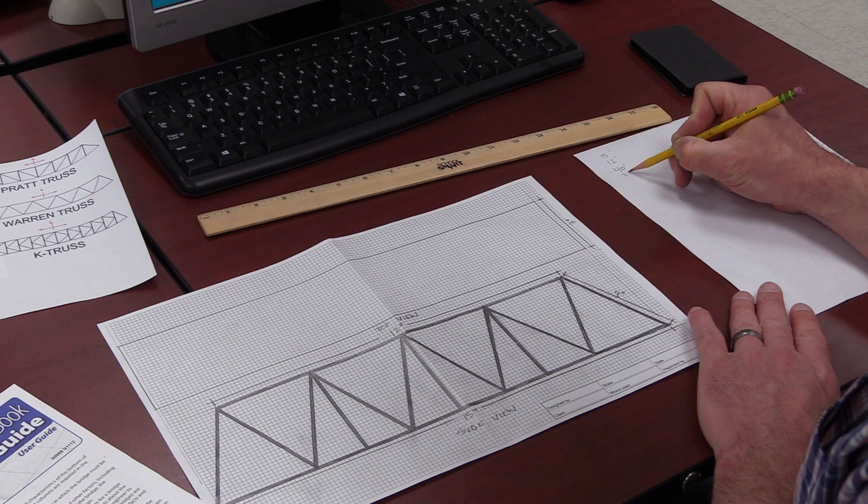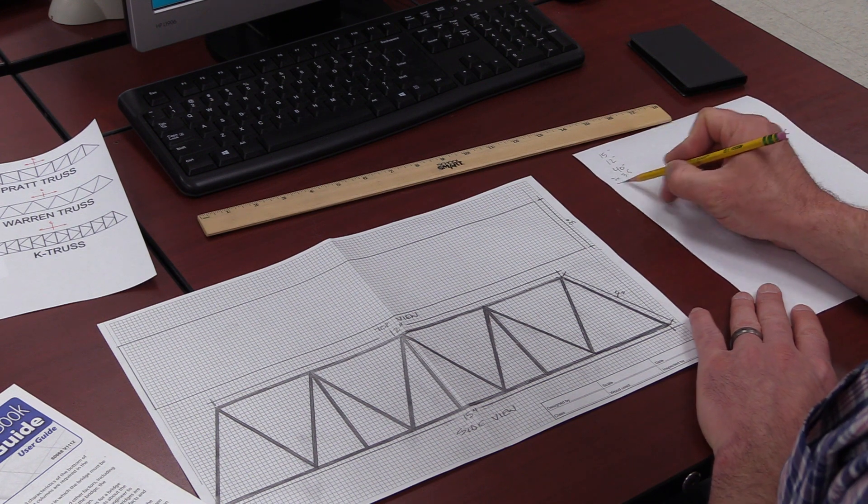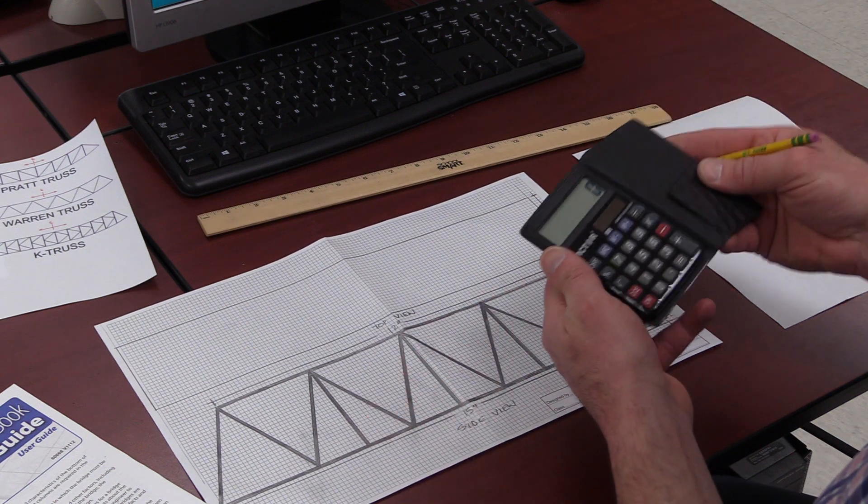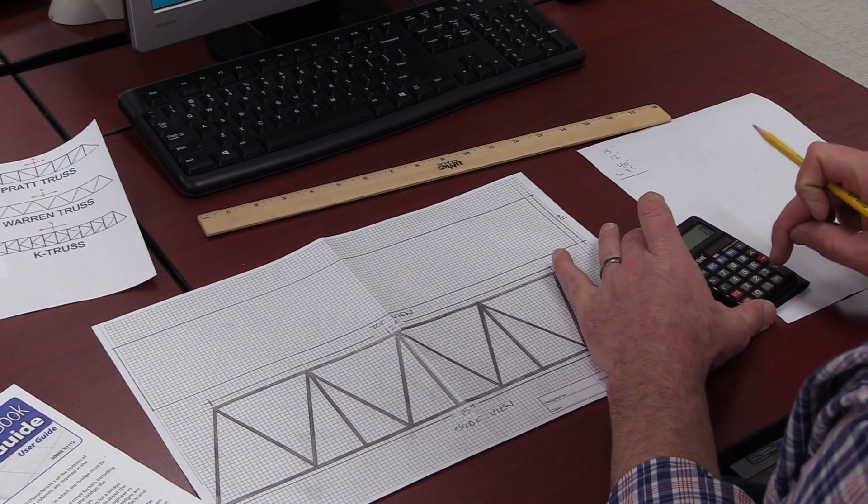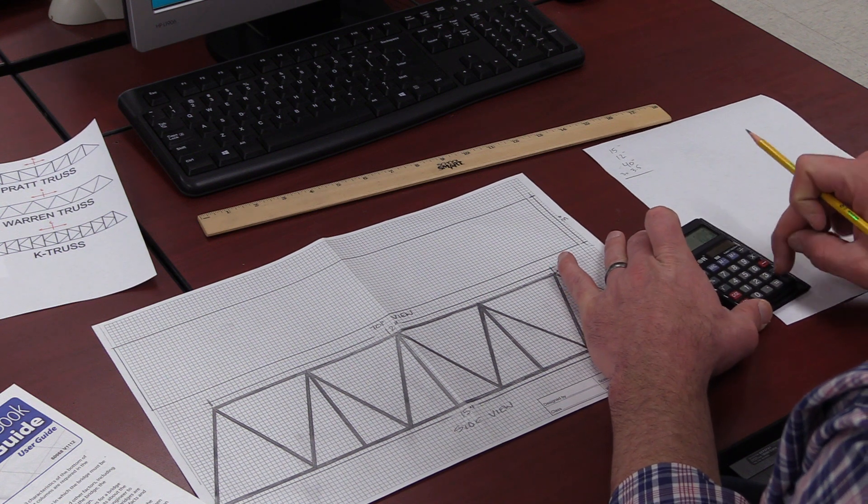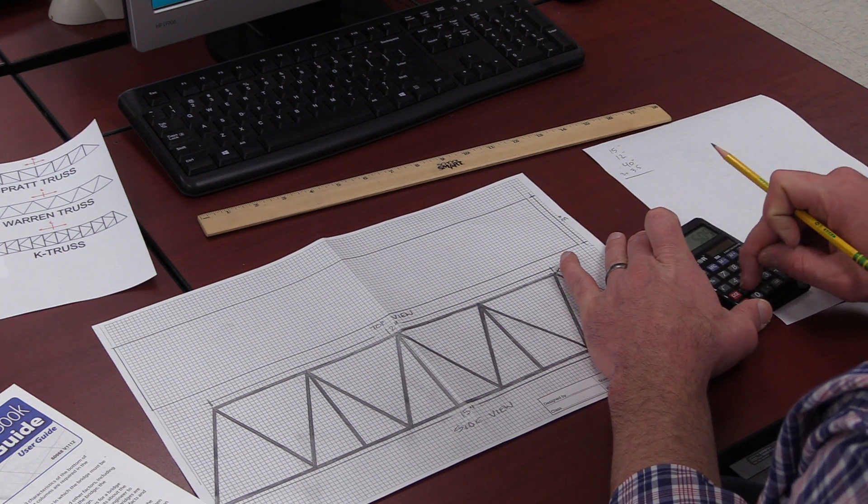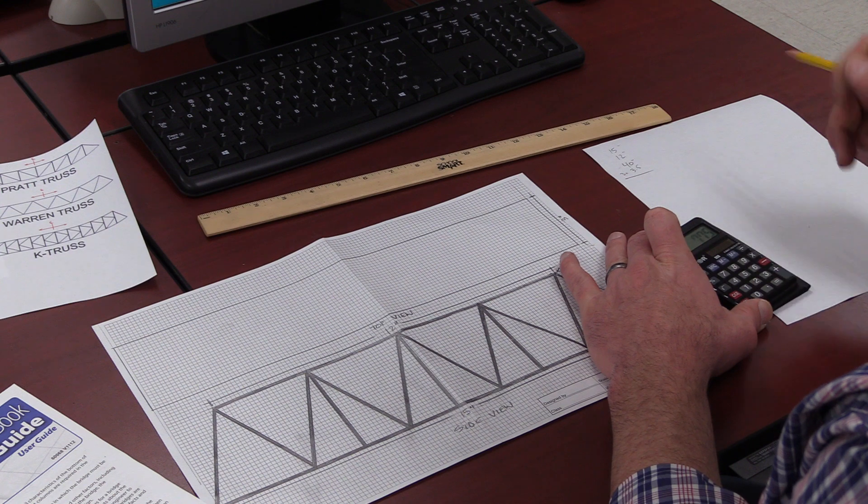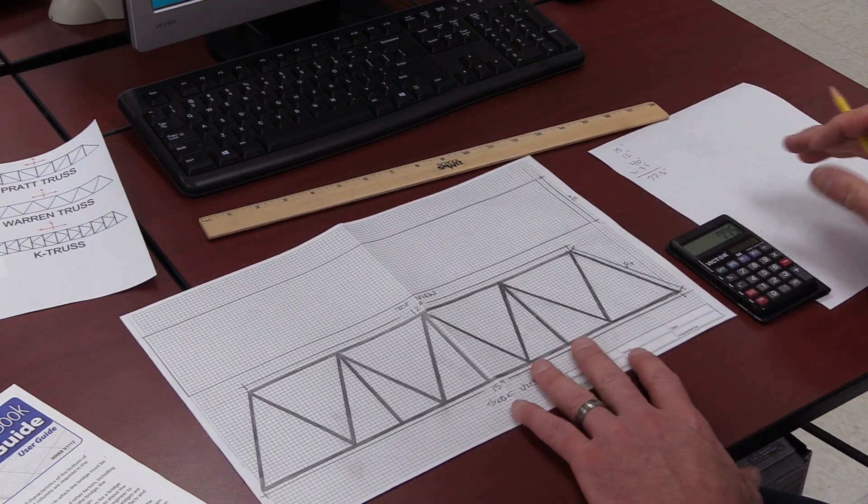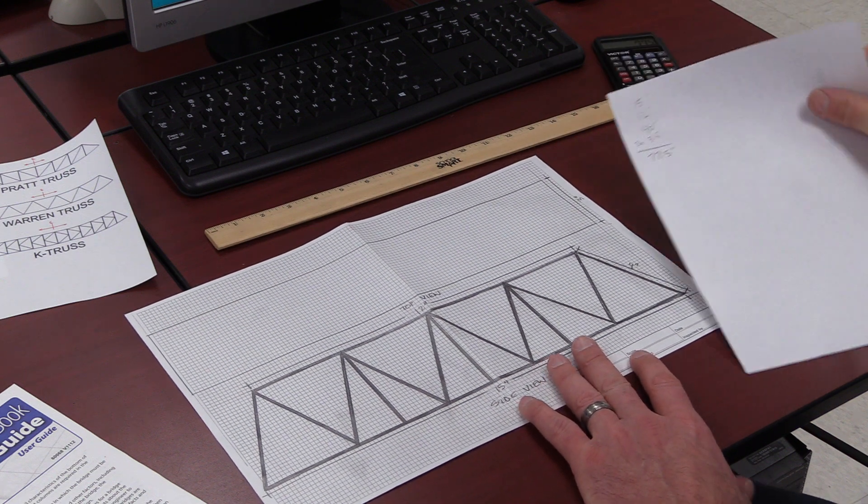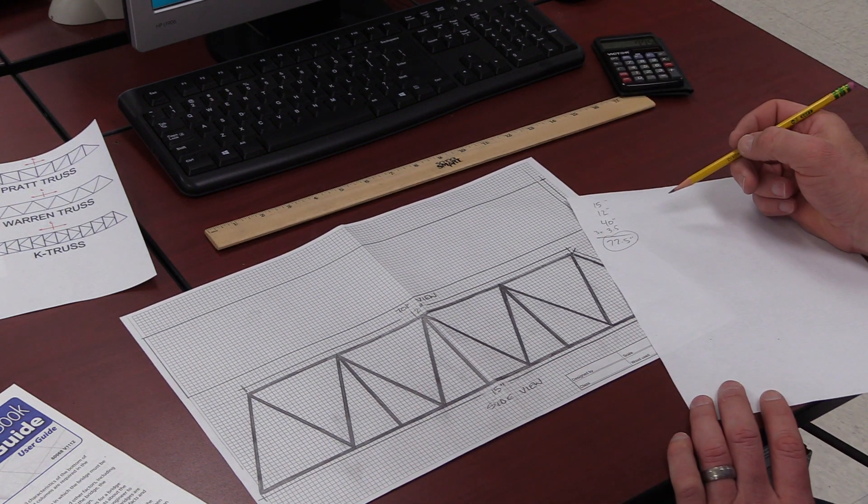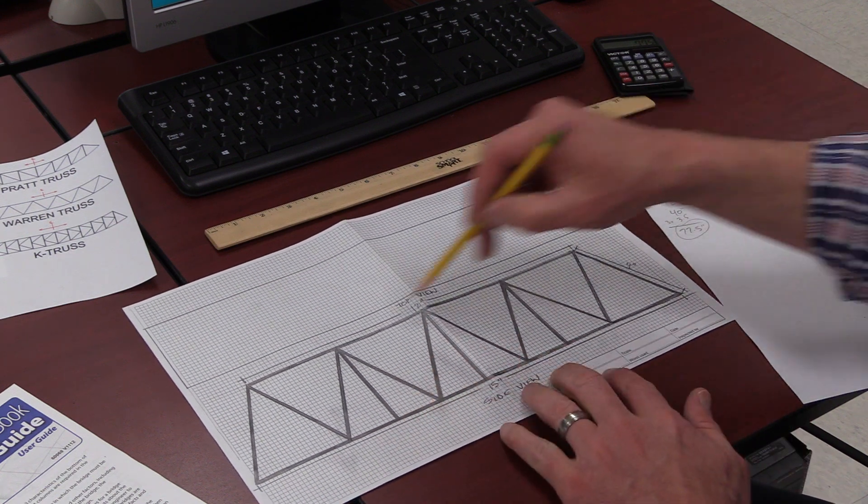So what I'm going to do, I'm going to total up those numbers. Three times three and a half - ten and a half plus 40 plus 12 plus 15. So I get a total of 77 and a half inches of balsa wood that I need to build just this one truss.